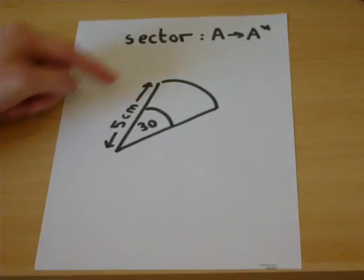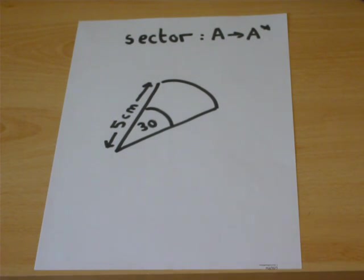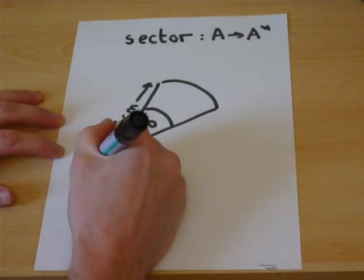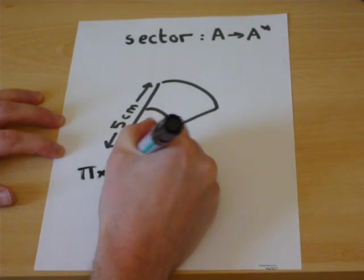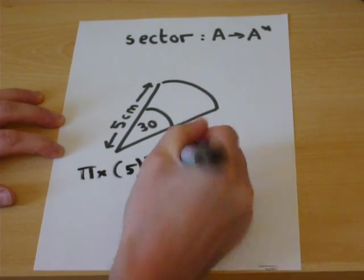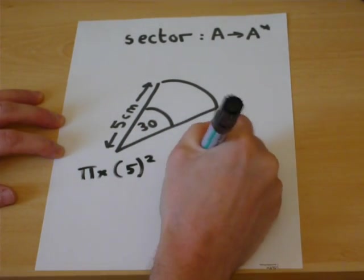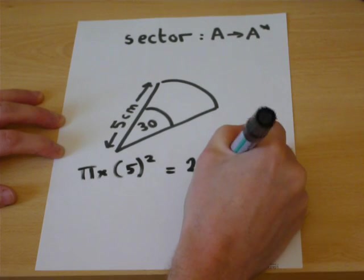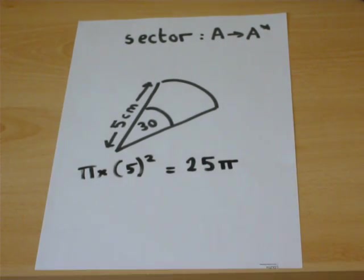The five represents the radius of what would be a full circle. If I asked you for the area of a circle, it would be π times five squared. Five squared is twenty-five, with a π here: twenty-five π. But this is not a full circle - it is a fraction of a circle.